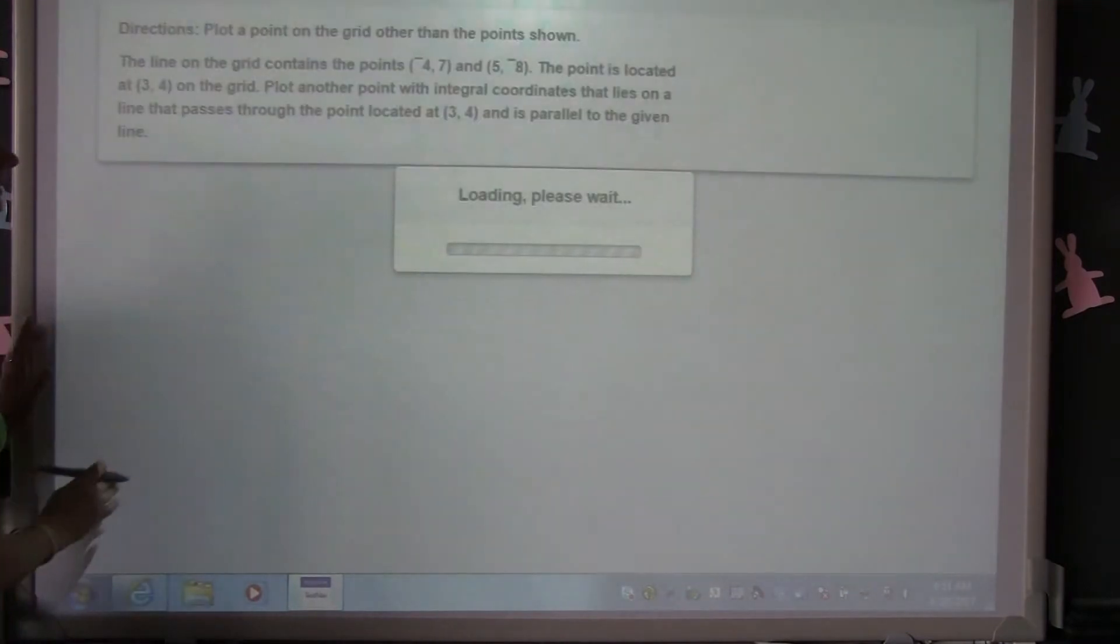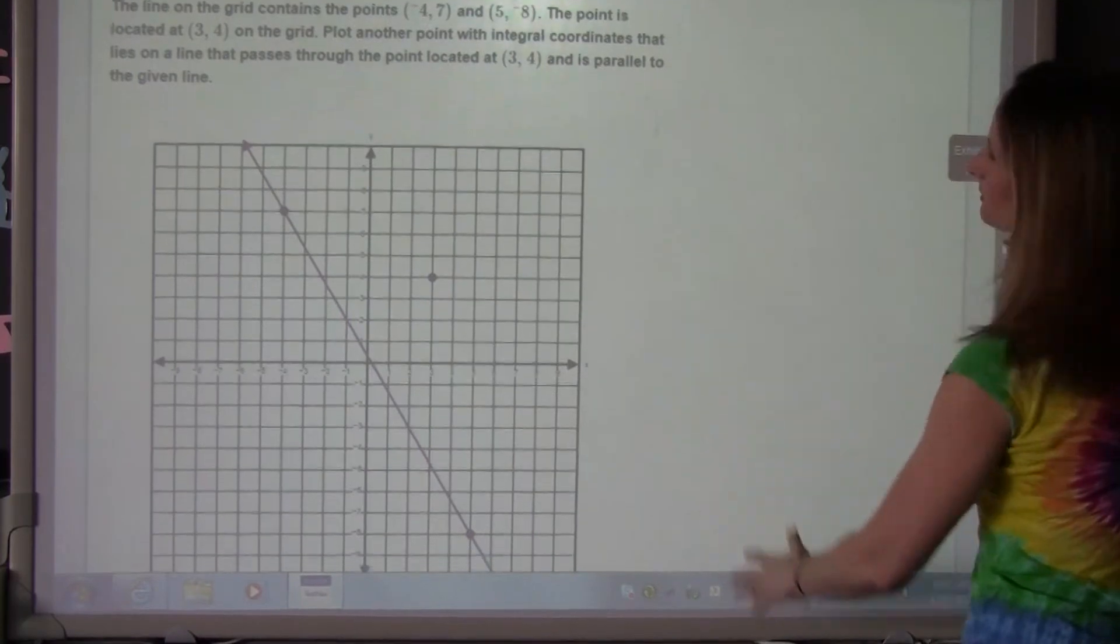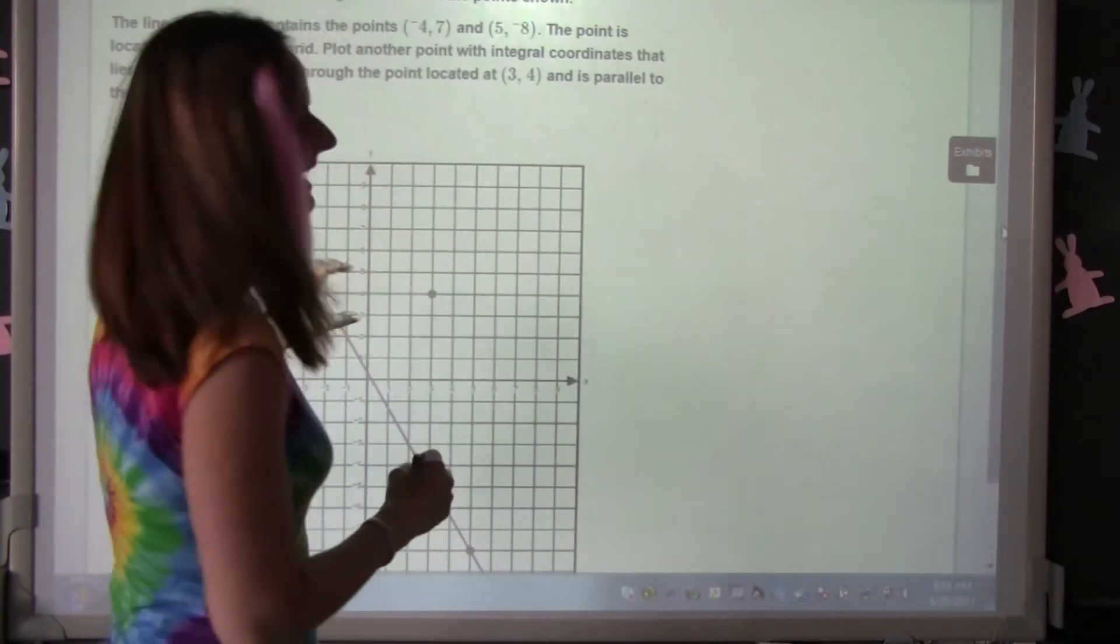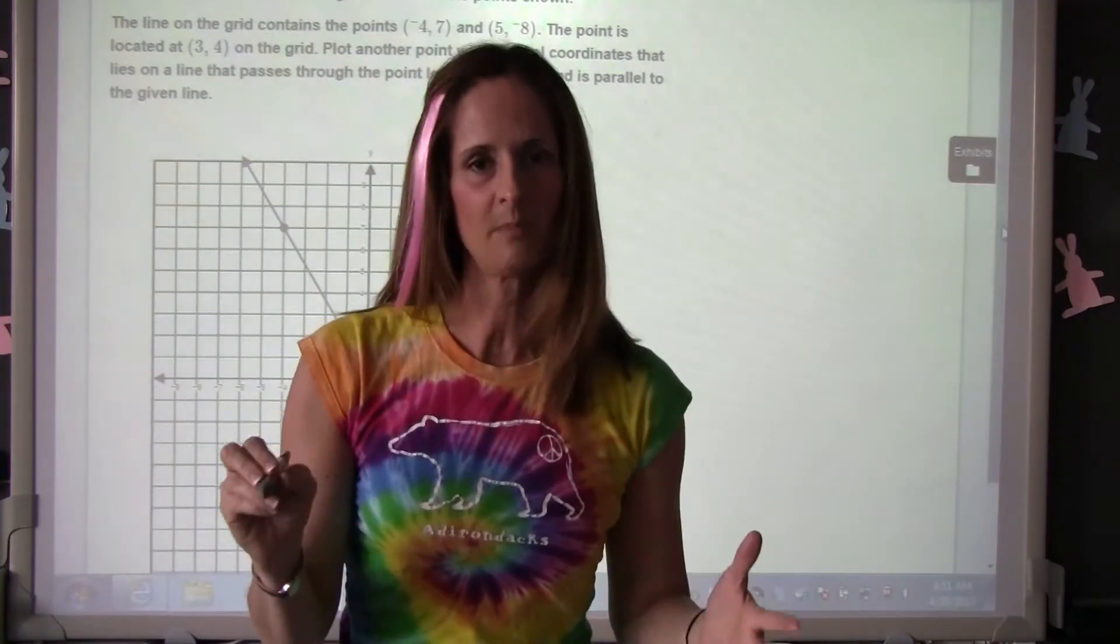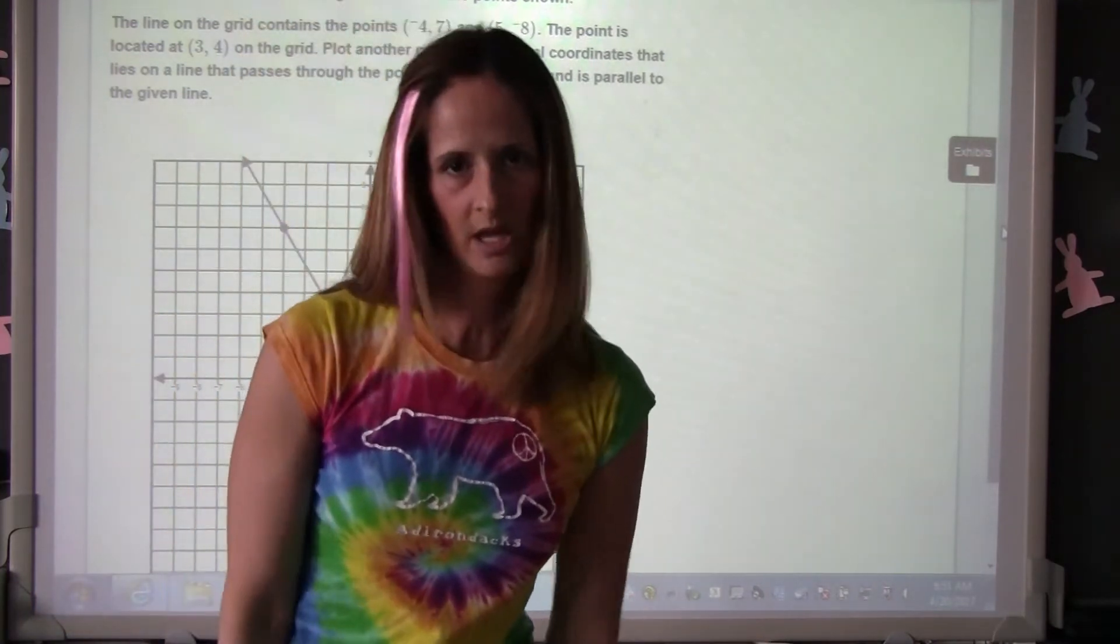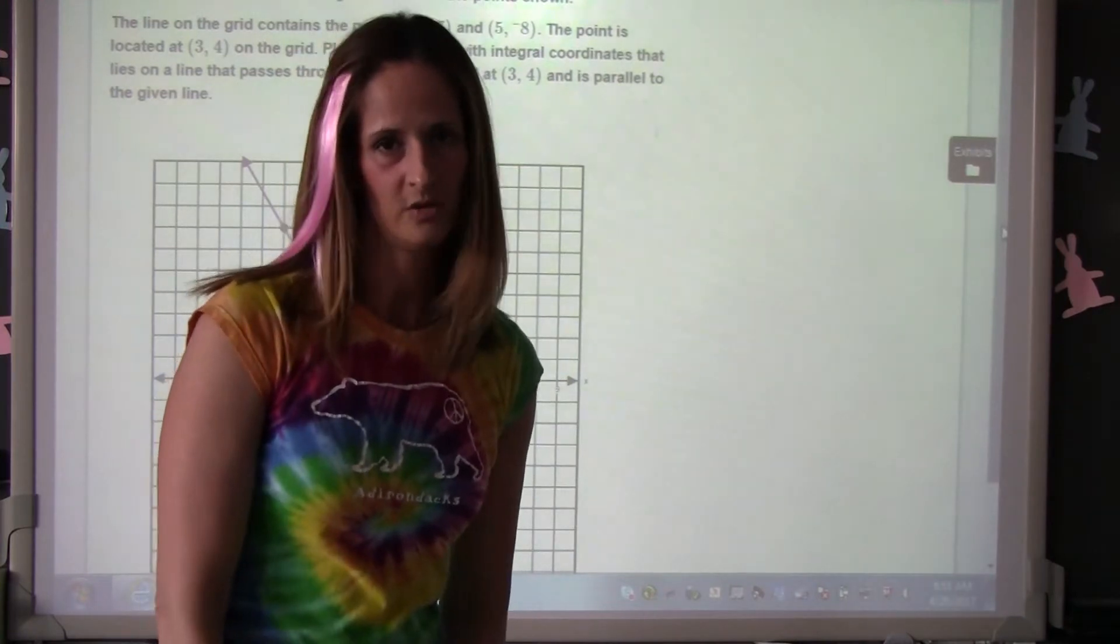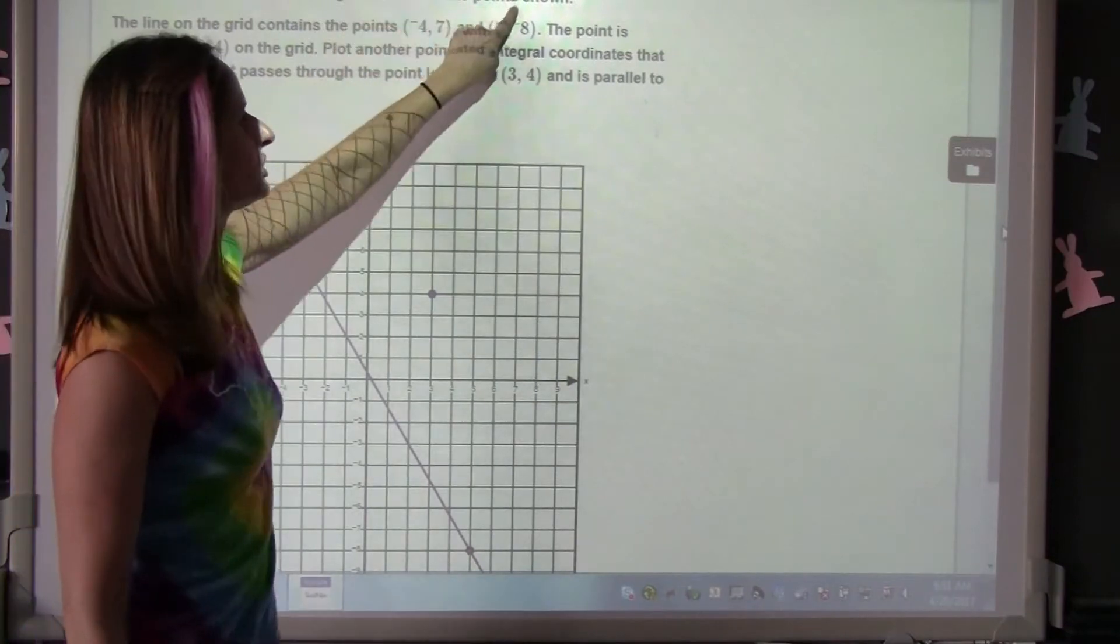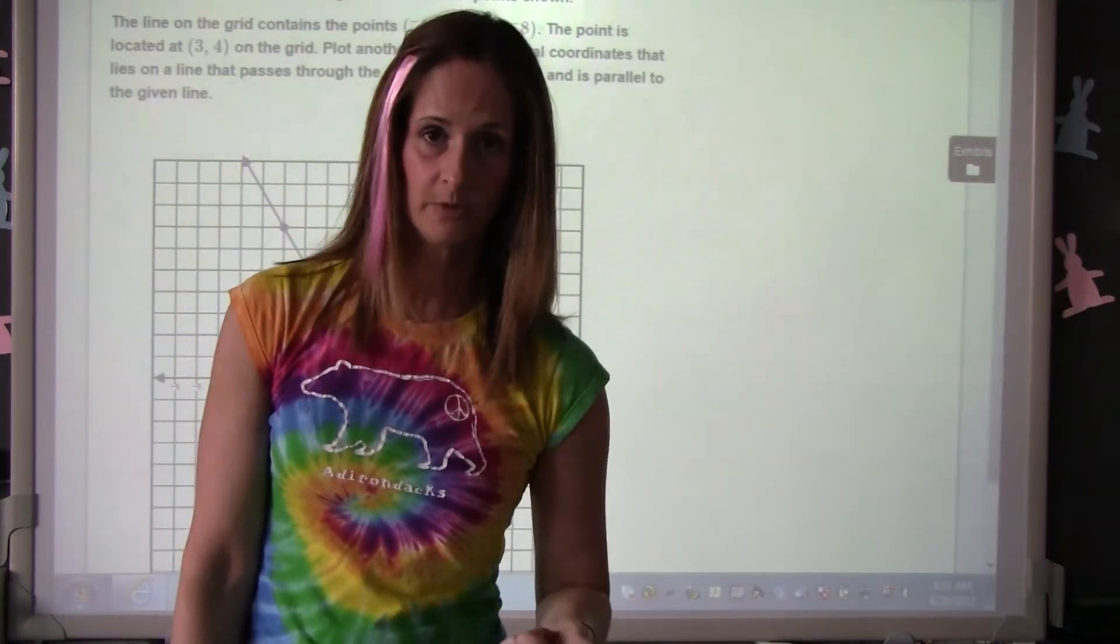This is a technology-enhanced question with none of the tools here. The way that this technology works is that if you're gonna select your answer on the actual problem, then you can't also write on top of it. Here they want you to select your answer on the grid, so you can't also write on the grid. Plot a point on the grid other than the points shown. So you are supposed to plot a point on the grid. That's your answer, and you move on.